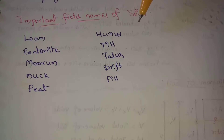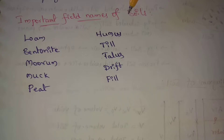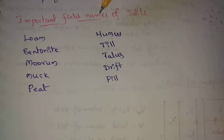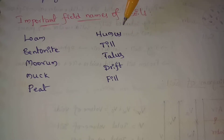Next one, humus. Humus is an organic amorphous earth of top soil consisting of partially decomposed vegetative matter. The color of humus is dark brown.